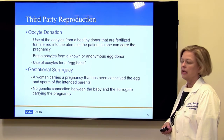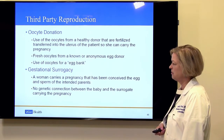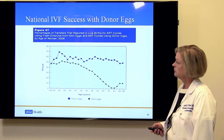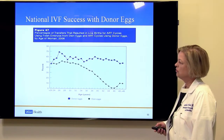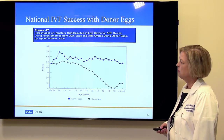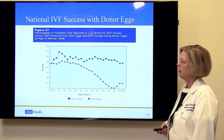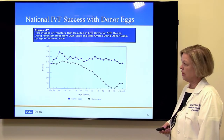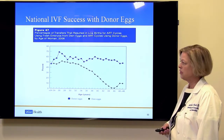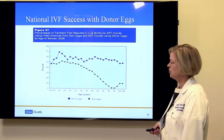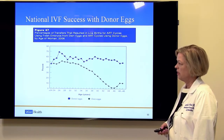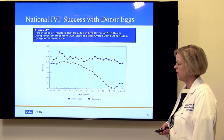It is better, we have found, that there be no genetic connection between the baby and the surrogate carrying the pregnancy. This graph shows us the success rate, in terms of percent, over a woman's reproductive lifespan, of using donated eggs from a young donor versus using her own eggs. The little blue squares are from the egg donor and the green circles are from the woman herself. We can see a significant drop in pregnancy rates as the woman approaches 40 and beyond.